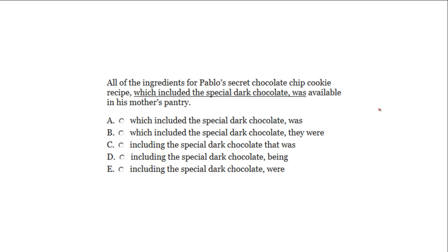One of the main things that we're going to be doing is putting prepositional phrases in parentheses. A prepositional phrase consists of a preposition — for instance, of, on, at, over, through, with — and ends with a noun: a person, place, thing, or idea. The reason we put prepositional phrases in parentheses is that the subject and verb in a sentence are never in a prepositional phrase.